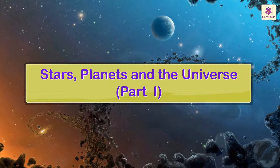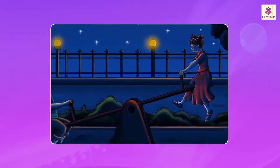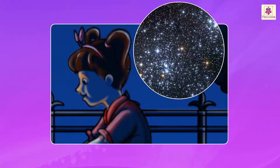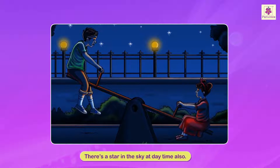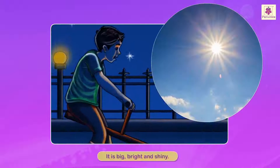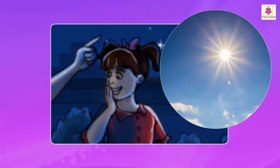Stars, planets and the universe. A student of standard 3 is playing in the garden at 8 p.m. on a summer evening. Her 12-year-old brother Raghav is also playing with her. At night there are so many stars in the sky, but there is not a single star in the sky at daytime. Manju says that's wrong — there's a star in the sky at daytime also. How is it possible? It is big, bright and shiny — you just can't miss it.